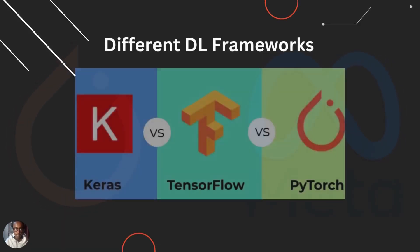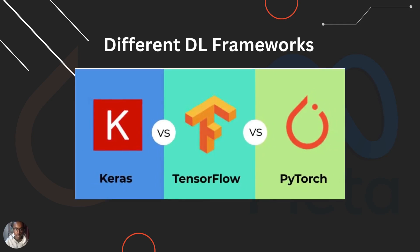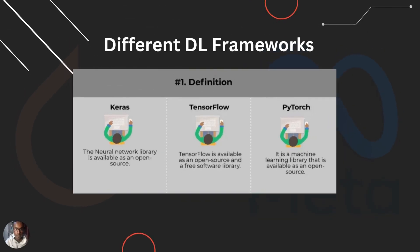Next, we will look at different deep learning frameworks and compare them across different criteria, to help evaluate which framework might be useful in different scenarios. The Keras deep learning framework is an open-source neural network library. Keras is now integrated into TensorFlow, so these two deep learning frameworks are used together. PyTorch is also an open-source library provided by Meta.